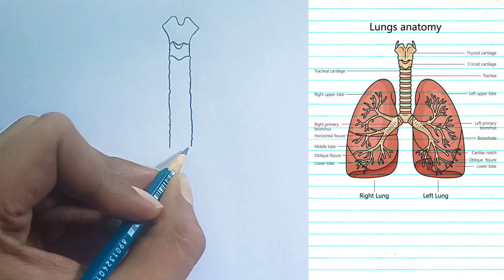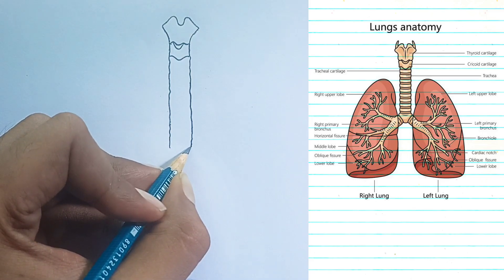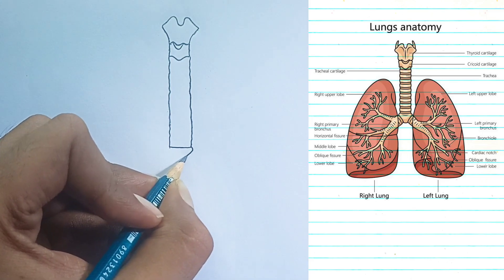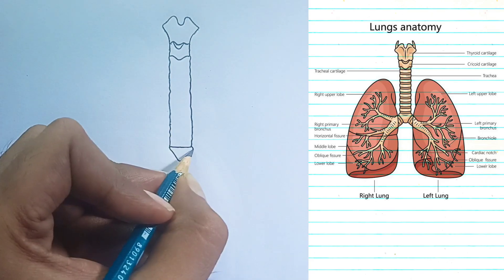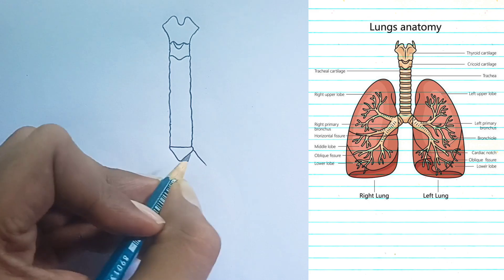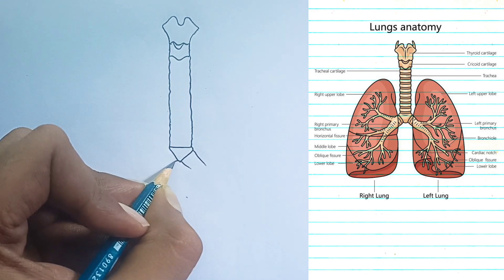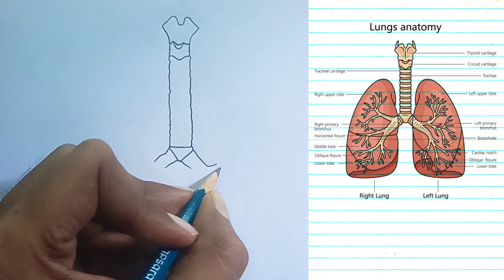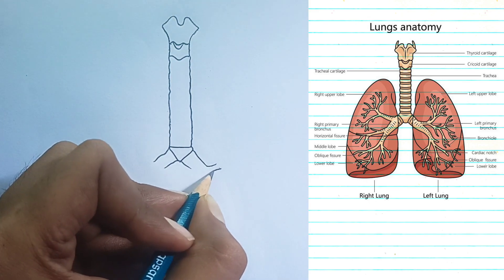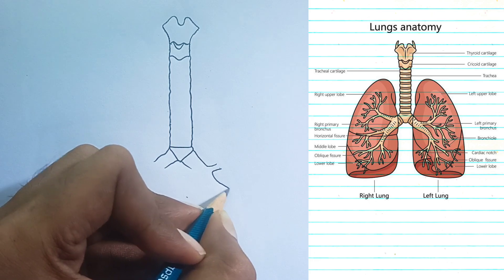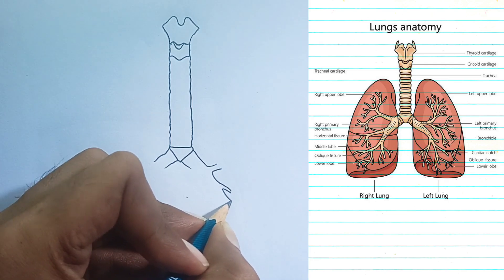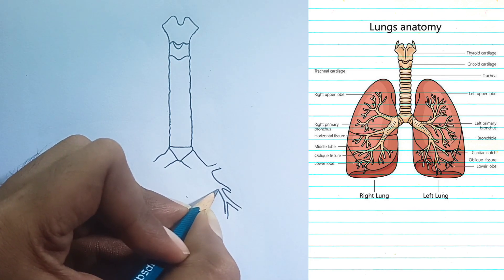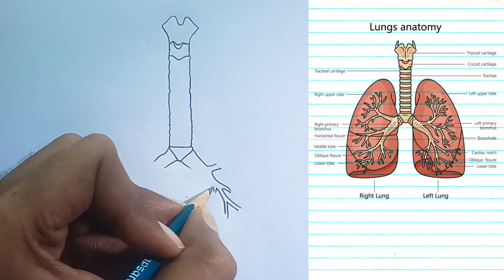Lungs and bronchial tree. The diagram shows two lungs: the right lung and the left lung. The right lung is typically larger and has three lobes: the right upper lobe, middle lobe, and lower lobe. These lobes are separated by fissures.